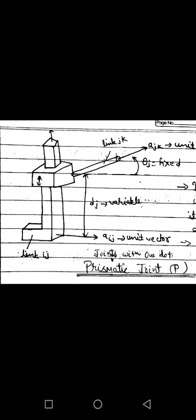The next joint is the prismatic joint. In this, the input link is IJ, the output link is JK, thetaJ is the fixed angle, and DJ is the variable offset. AIJ and AJK are unit vectors. It can move up and down, therefore it has 1 degree of freedom. The prismatic joint is denoted by capital P.